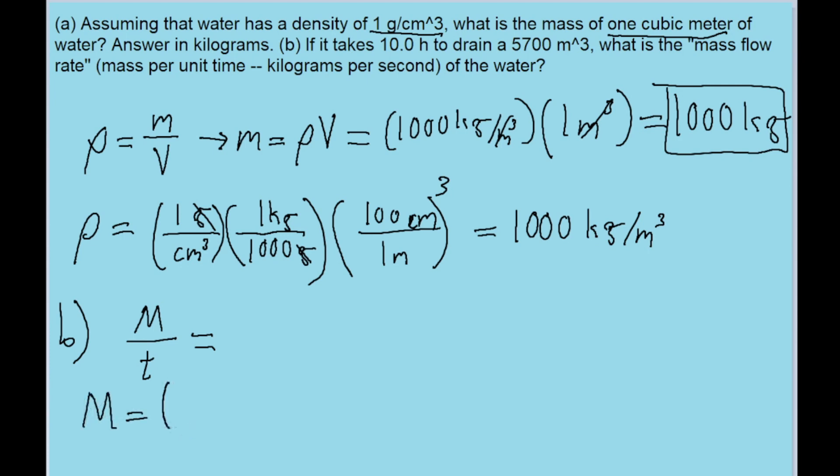So I'll define the mass using the same method we used in part A. We'll take the density of the water we found, 1,000 kilograms per cubic meter, and multiply it by the volume of the water that we have, 5,700 cubic meters. If we do that, we find that the mass of the water we're looking at is 5.70 times 10 to the power of 6 kilograms.